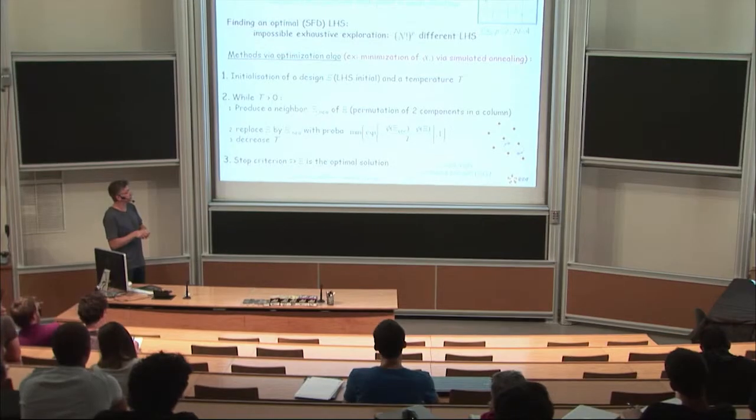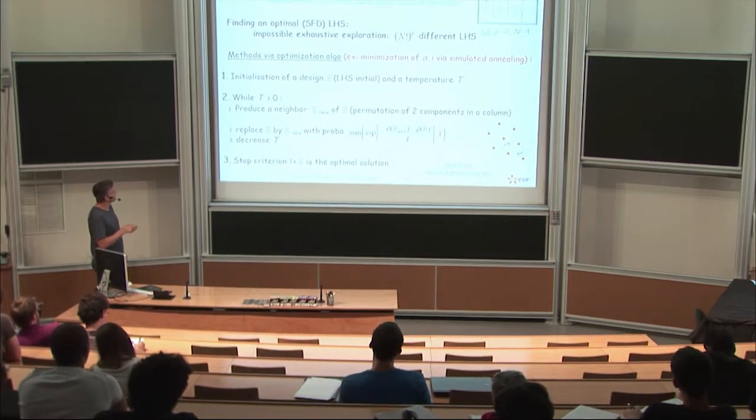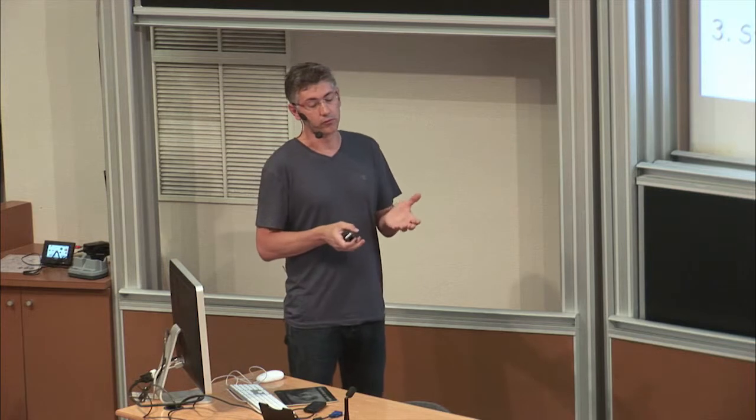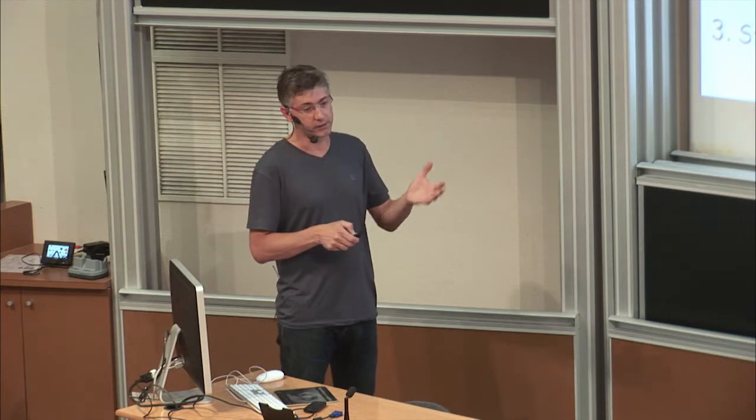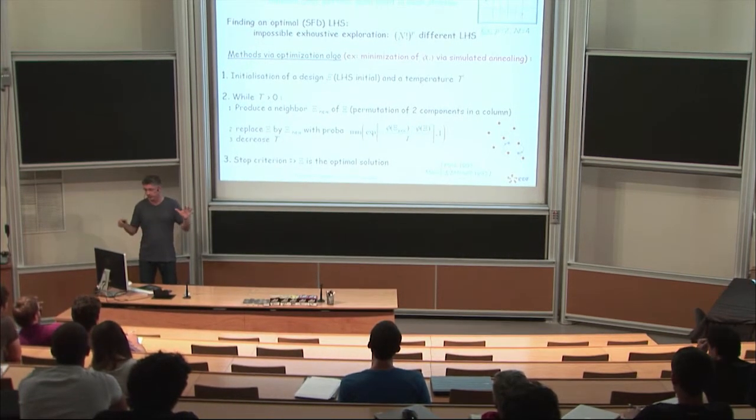We define a probability to replace the design with the new neighbor design. If the criterion is improved, we keep the design. If not, we keep the new design with a certain probability. The goal is for this probability to be high at the beginning and small at the end of the algorithm. We hope to converge to the optimal solution, but we don't have any convergence proof for this kind of algorithm.